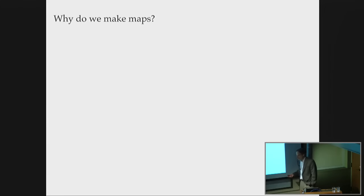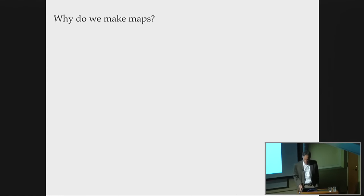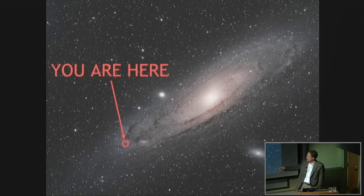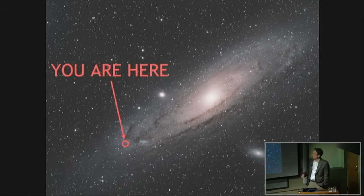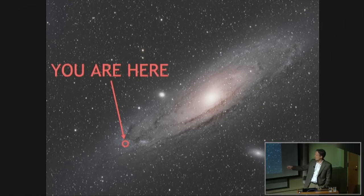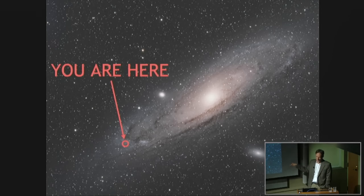Why do we make maps? Humans make maps because they want to know where they are. But if you're going to travel somewhere else, you need a map of what's in between. We just want to know the larger context of where we are. It's amazing how every time you try to look at an object, you find there's some dust between you and that object, and you need to correct your measurements for the dust.